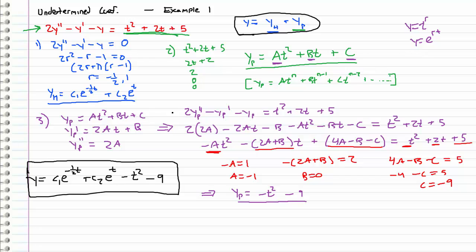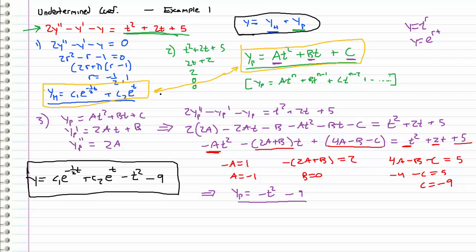One of the last things I want to stress is the importance of calculating the homogeneous equation first. A big reason why that's important is that all the terms in our assumed particular solution form must be linearly independent with the terms in the homogeneous solution. If any of the terms in the particular solution we assume are linearly dependent — that is, if they are multiples of y1 or y2 in the homogeneous solution — then there's something we have to do. It will show up in a later video.